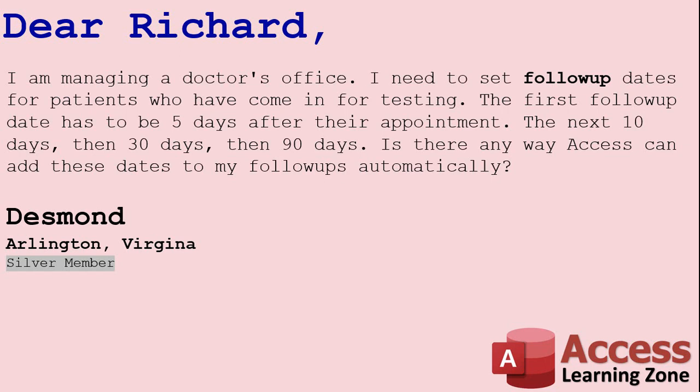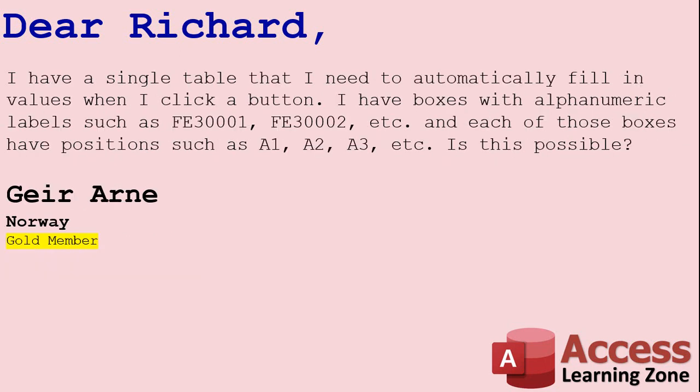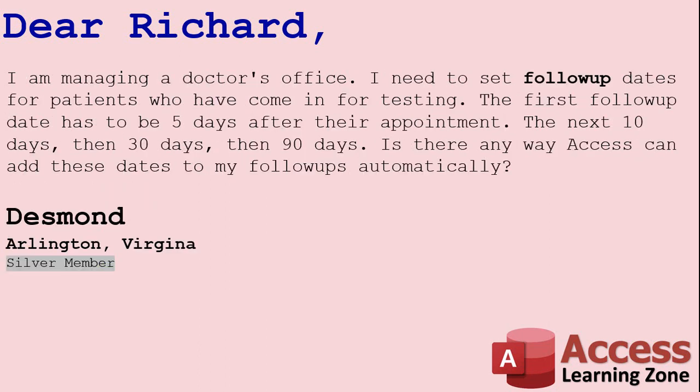The follow-up question comes from Garen in Norway, a gold member. He says: I have a single table that I need to automatically fill in values when I click a button. I have boxes with alphanumeric labels such as FE3001, FE3002, and so on, and each of those boxes have positions such as A1, A2, A3. Is this possible? Yes, this is possible, but it will involve a little more work — some looping and changing alphanumeric values. We'll do this in the extended cut for members.